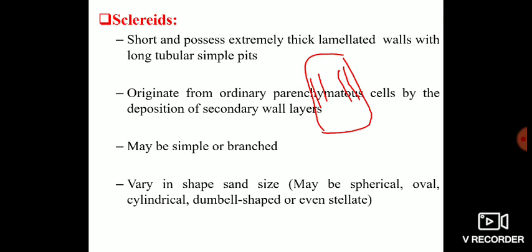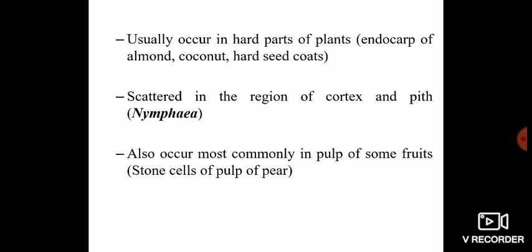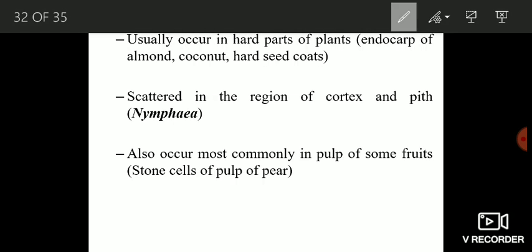These cells usually occur in hard parts of plants. Example is endocarp of almond, coconut and hard seed coats. And these cells are found scattered in the region of cortex and pith in case of Nymphaea. In Nymphaea, you will find these cells in cortex and pith.